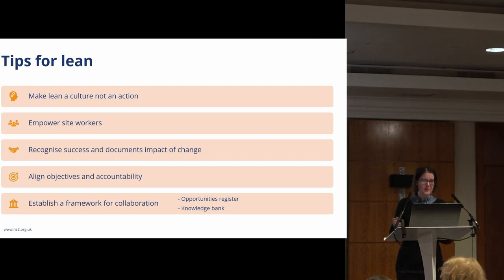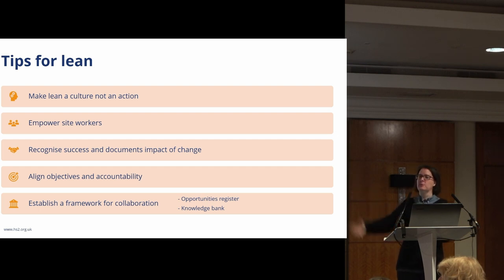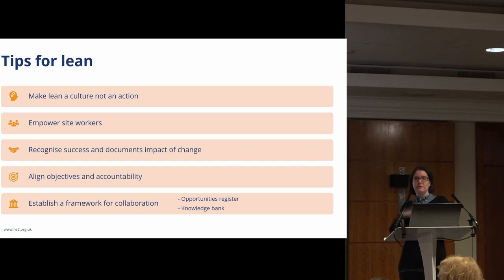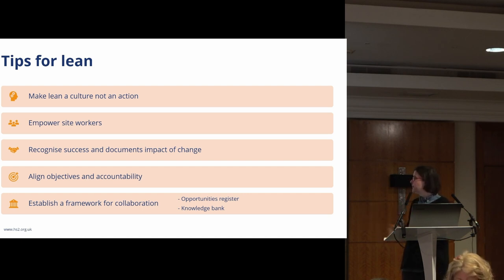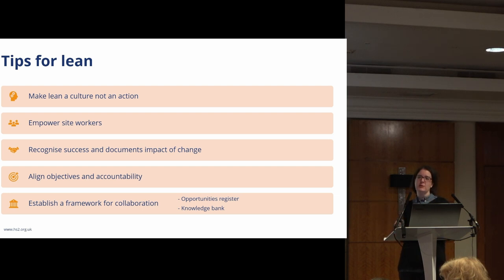So, tips for lean: make it a culture, not just an action — everyone needs to be doing this all the time throughout your project. Empower your site workers, communicate with your team, help them understand what you're trying to achieve. Recognize success and document the impact of change — share knowledge, because innovation doesn't have to be big; a small change that makes something better is still worth sharing. Accountability is a really big one — make everyone accountable for your end goal and for delivering that project successfully. Establish your framework of collaboration — who are your allies, who do you need to be talking to, who's going to tell you if the program's on track?